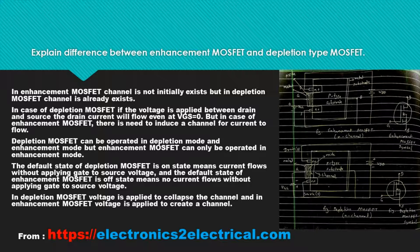The default state of depletion MOSFET is on state, meaning current flows without applying gate-to-source voltage. The default state of enhancement MOSFET is off state, meaning no current flows without applying gate-to-source voltage. In depletion MOSFET, voltage is applied to collapse the channel, and in enhancement MOSFET, voltage is applied to create a channel.